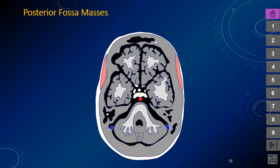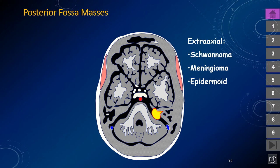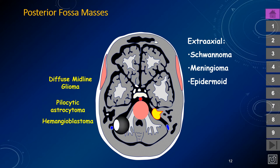When we think about triangulation of posterior fossa masses, the extraaxial lesions are most commonly schwannomas, meningiomas, and epidermoid inclusion cysts. Intrinsic lesions of the pons may be diffuse midline glioma, formerly called diffuse intrinsic or diffuse infiltrating pontine glioma. Lesions in the cerebellar hemisphere that are fluid-secreting, especially with an enhancing mural nodule, are pilocytic astrocytomas in children or hemangioblastomas in adults. Lesions inside the fourth ventricle are likely ependymoma, but sometimes medulloblastoma, which can also arise in the cerebellar hemispheres and vermis.